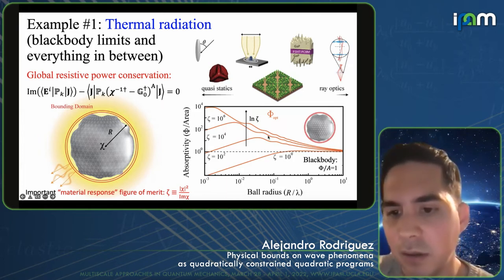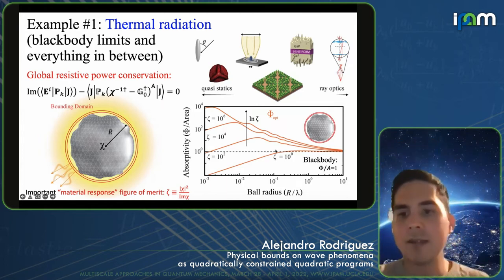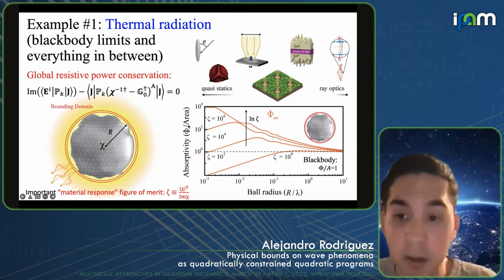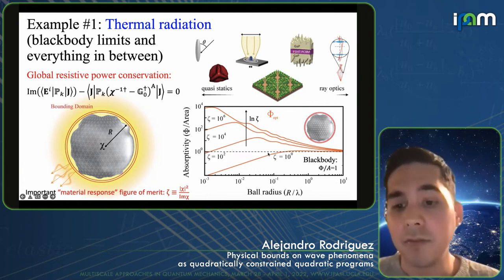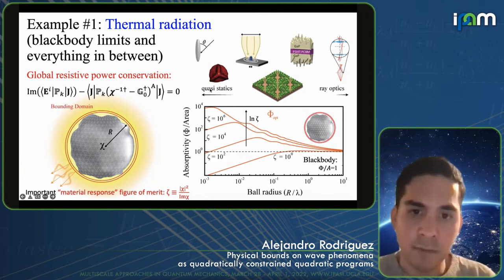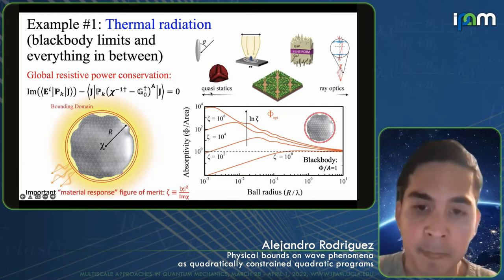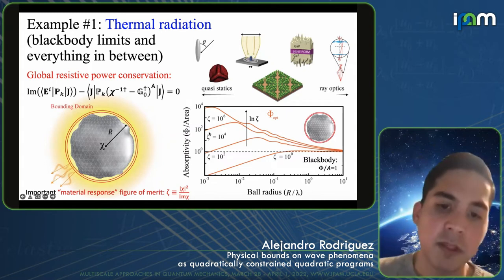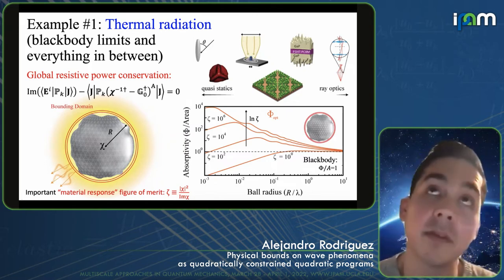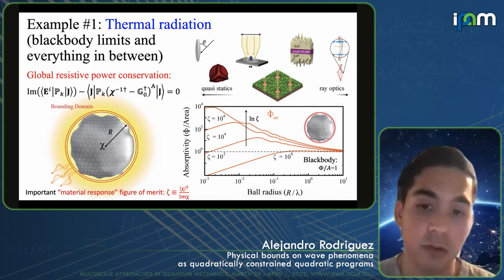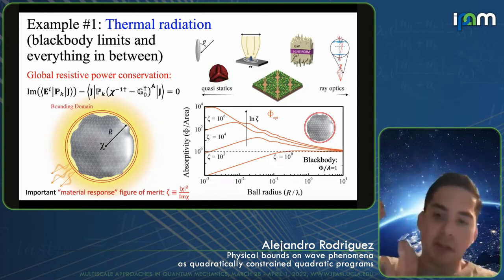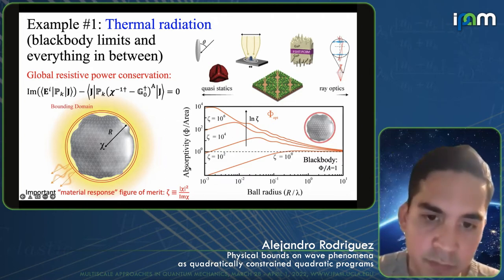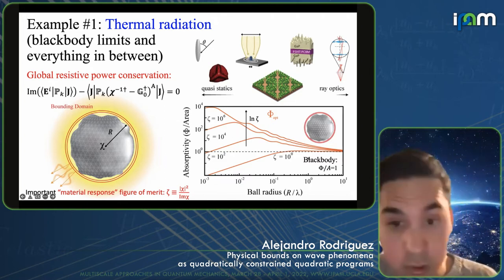In the limit of large domains, all these lines asymptote to the black body formula — the dashed line — where absorptivity has to be bounded by one. As you go to very small domains, all these lines scale linearly, meaning the absorption scales like the volume — capturing the Rayleigh scattering physics. And between these limits, the absorptivity or thermal radiation can be much bigger than the black body limits suggest.